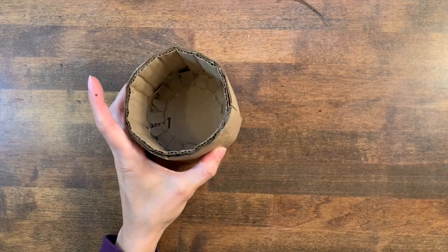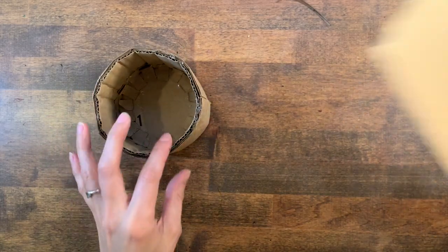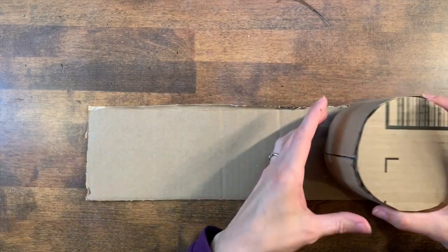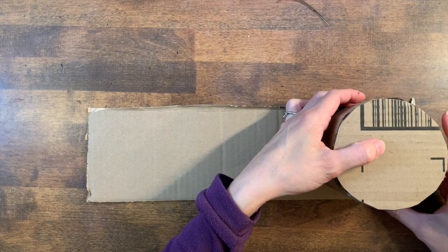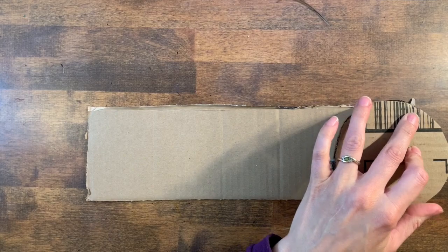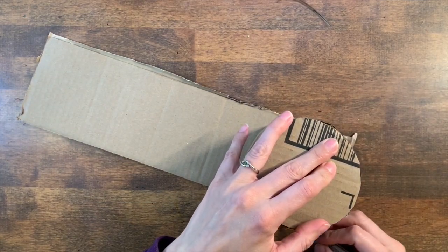Here's how to make a lid for your round or cylindrical container. Start with a piece of cardboard and place your container upside down on the cardboard as close to an edge as possible. Use a pencil or a marker to trace around it.